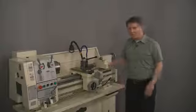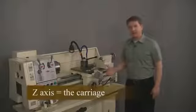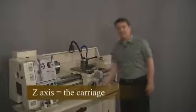The Z axis is the side to side or longitudinal axis and consists of the carriage moving left or right along the top of the bed like this.